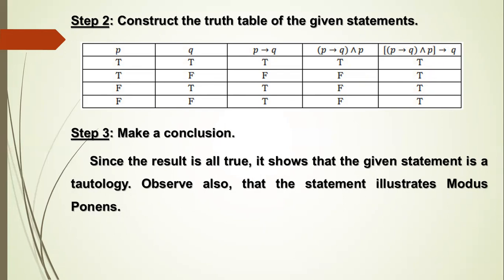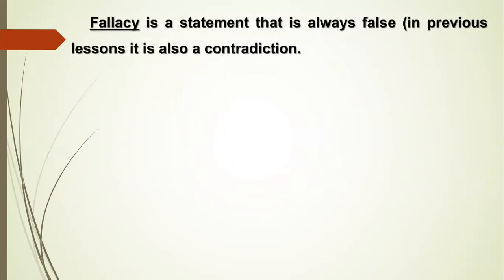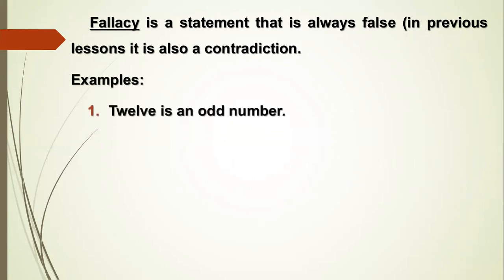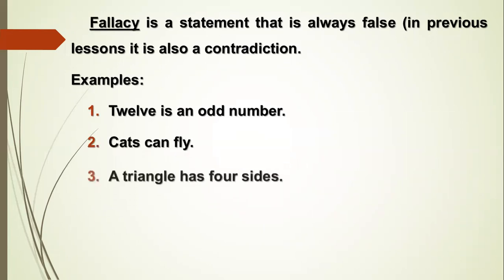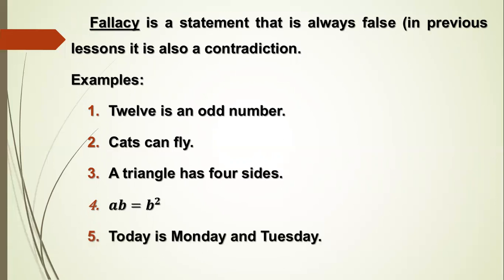Observe also that the statement illustrates Modus Ponens. Fallacy is a statement that is always false. In previous lessons, it is also called a contradiction. Examples: 1. 12 is an odd number. 2. Cats can fly. 3. A triangle has 4 sides. 4. AB is equal to B squared. 5. Today is Monday and Tuesday.